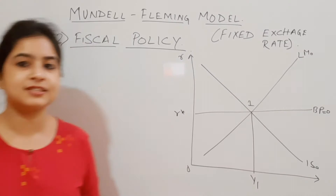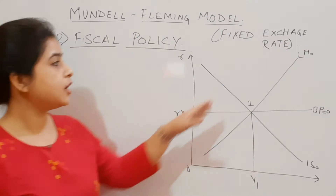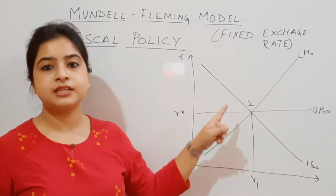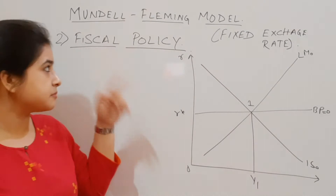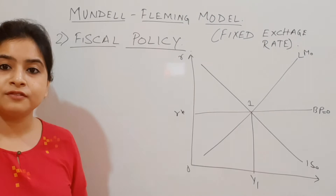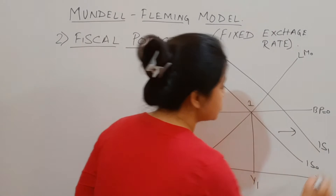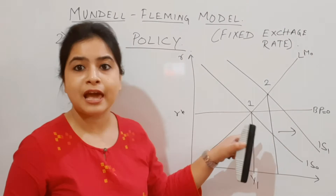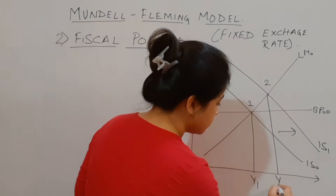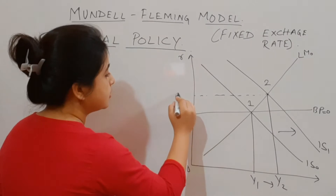Now moving to fiscal policy. The initial diagram shows LM0, IS0, and the BP curve with equilibrium at point 1, where output is Y1 and interest rate is R*. We assume fiscal expansion takes place, which shifts the IS curve rightward to IS1. The new IS1 and the initial LM0 intersect at point 2, where output has increased.